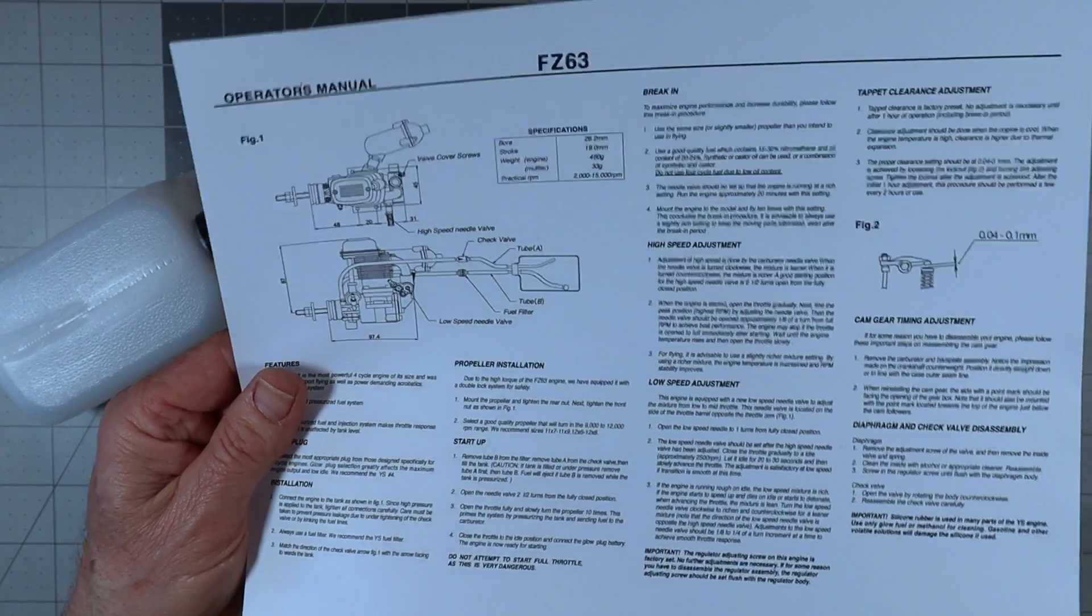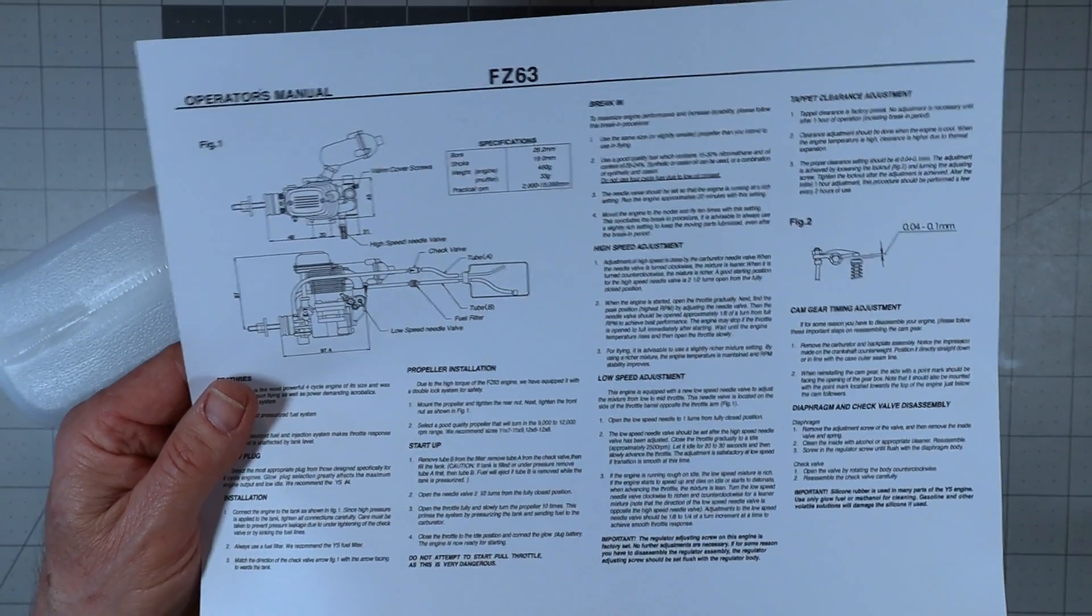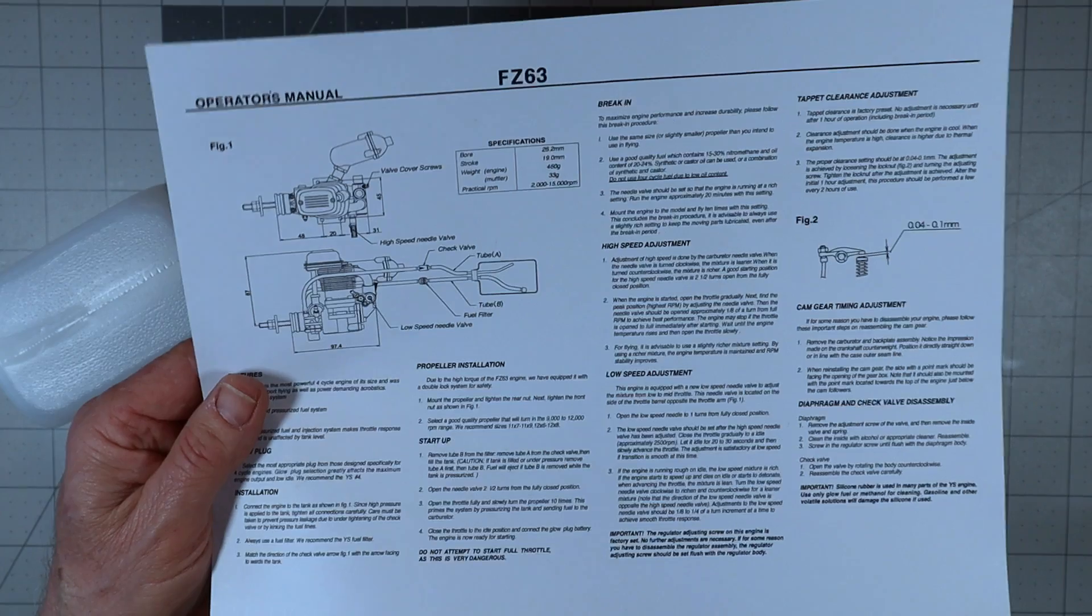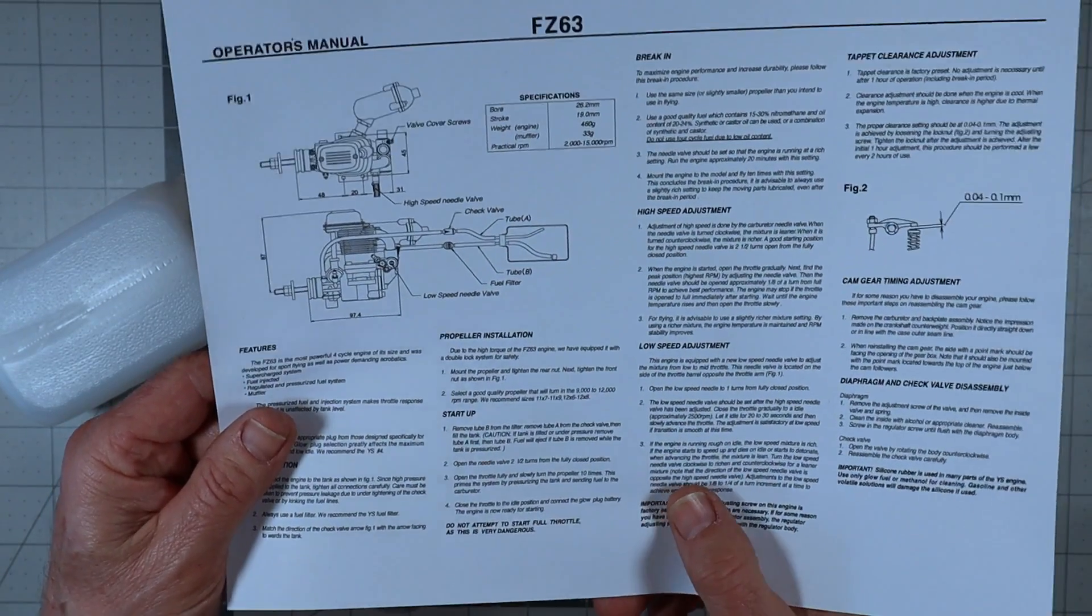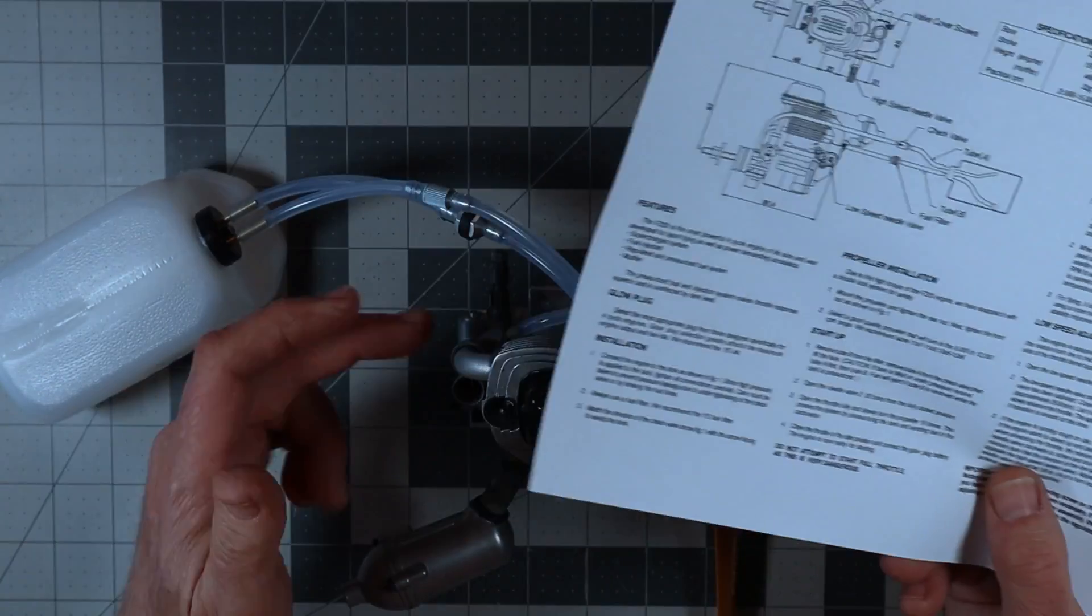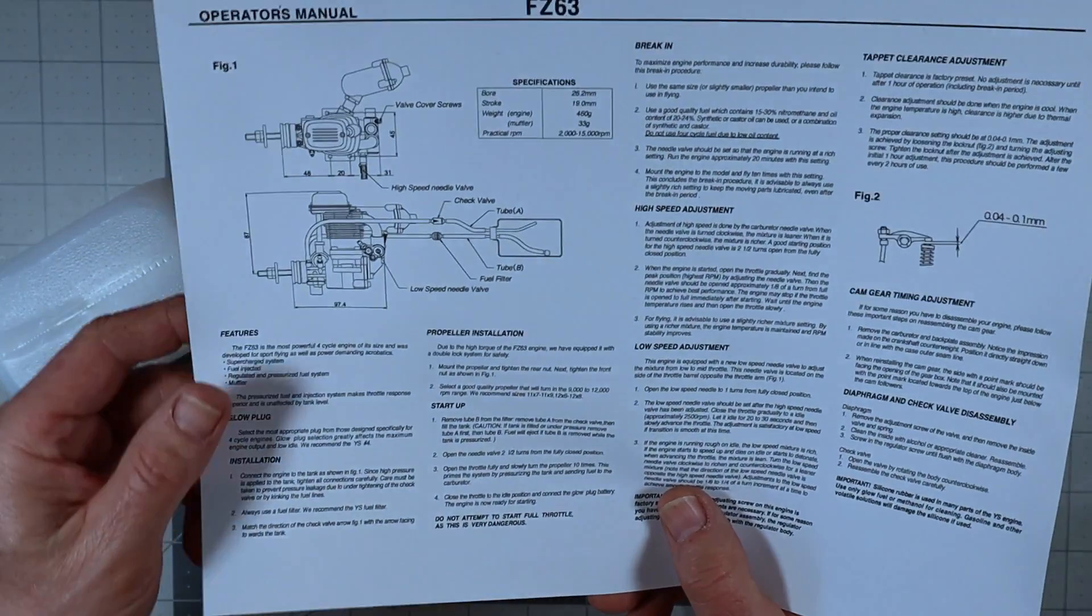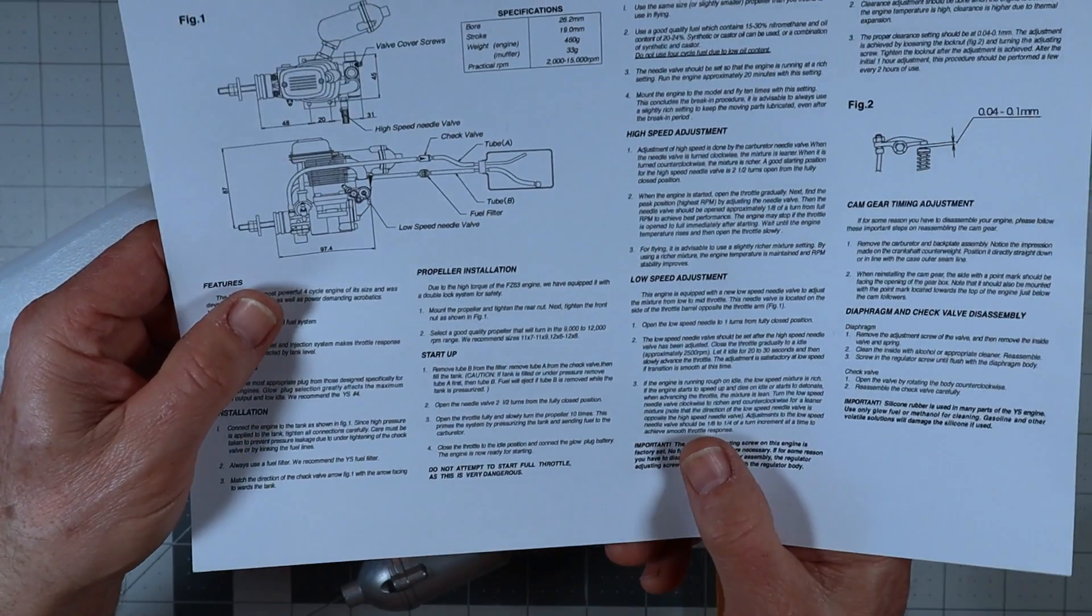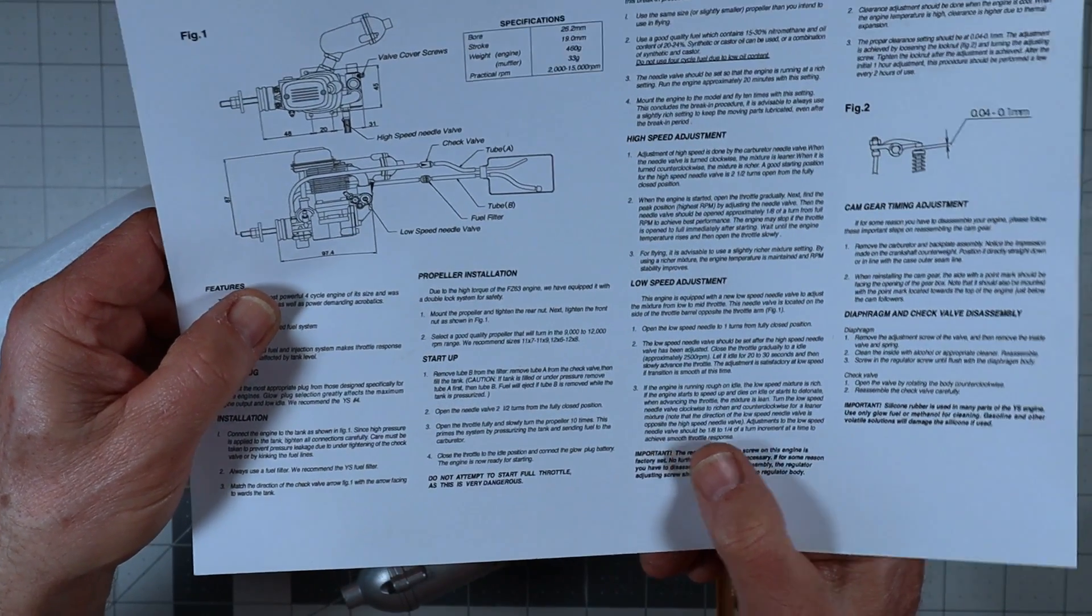I thought I had caught that on video, but I didn't go and watch all of my other YS videos, but I could have sworn that I caught that on video. It was humorous. I was like, oh, nice. Open the needle valve two and a half turns from the fully closed position. Mine is. Open the throttle fully and slowly turn the propeller 10 times. This primes the system by pressurizing the tank and sending fuel to the carburetor.